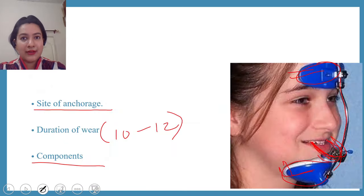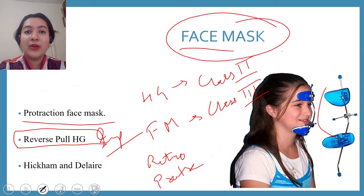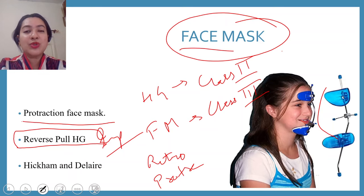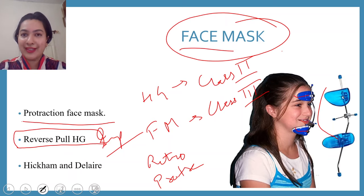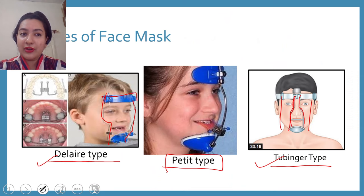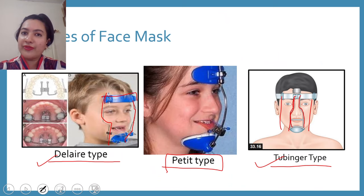To summarize the basics of face mask: it is used in correction of class 3 malocclusion; it helps to protract the maxilla using two anchor units. The amount of force applied ranges from 300 to 500 grams. Duration of wear is 10 to 12 hours a day, preferably in the evening or at night when growth hormones are released by the anterior pituitary gland. The ideal age for giving this appliance is during mixed dentition, that is 6 to 12 years of age.